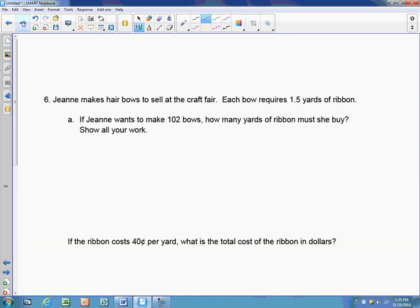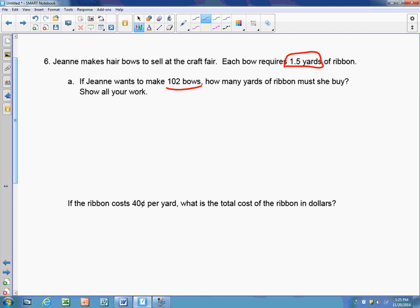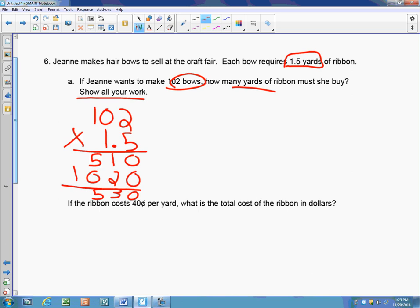Next question is question six. It's about Jeannie. She makes hair bows to sell at the craft fair. Each bow requires one and five-tenths yards of ribbon. Part A tells me if Jeannie wants to make 102 bows, how many yards of ribbons will she buy and show that work. I'm going to take my 102 and put that on the top, and my one and five-tenths yards. And I'm going to multiply. Then I'm going to add it together. And I have one jump this time. So I get that she needs 153 yards of ribbon.